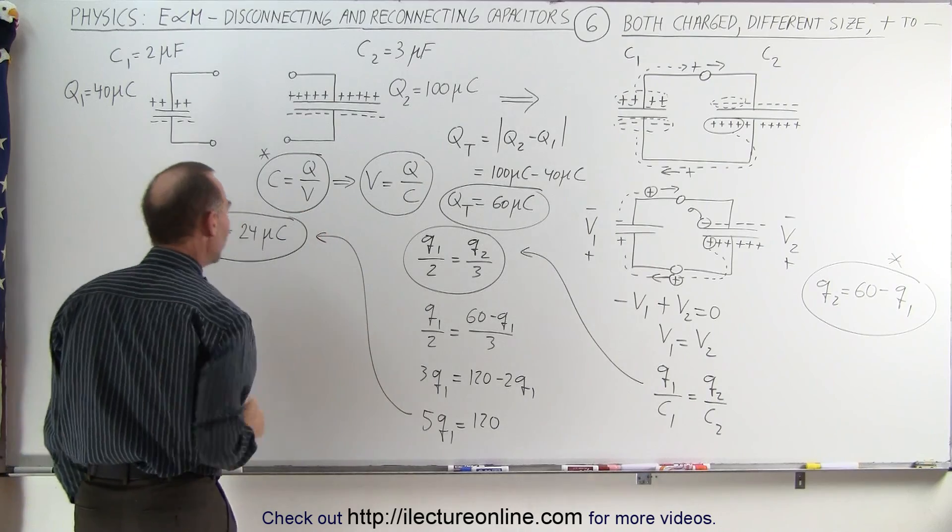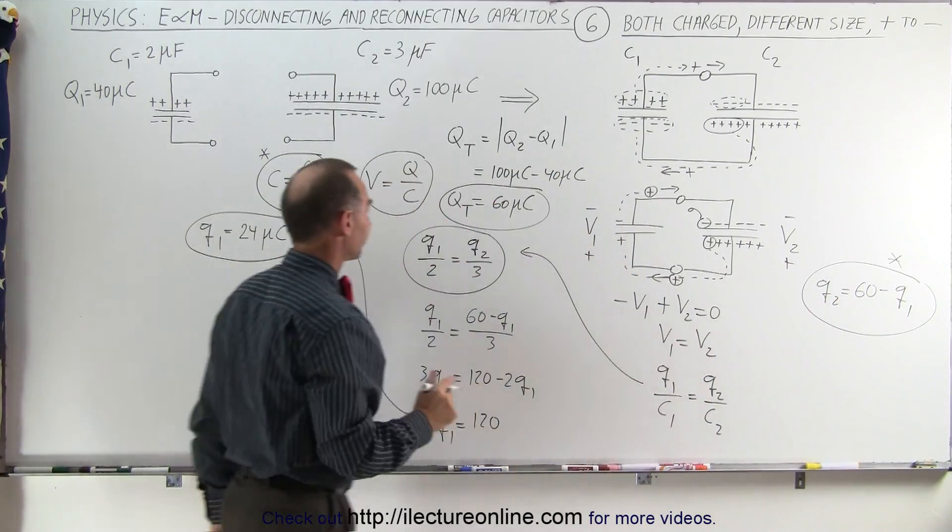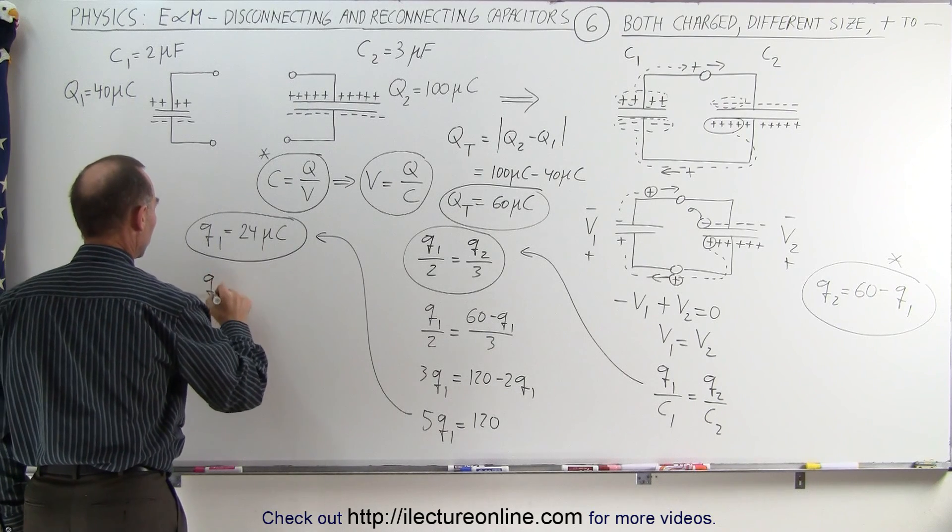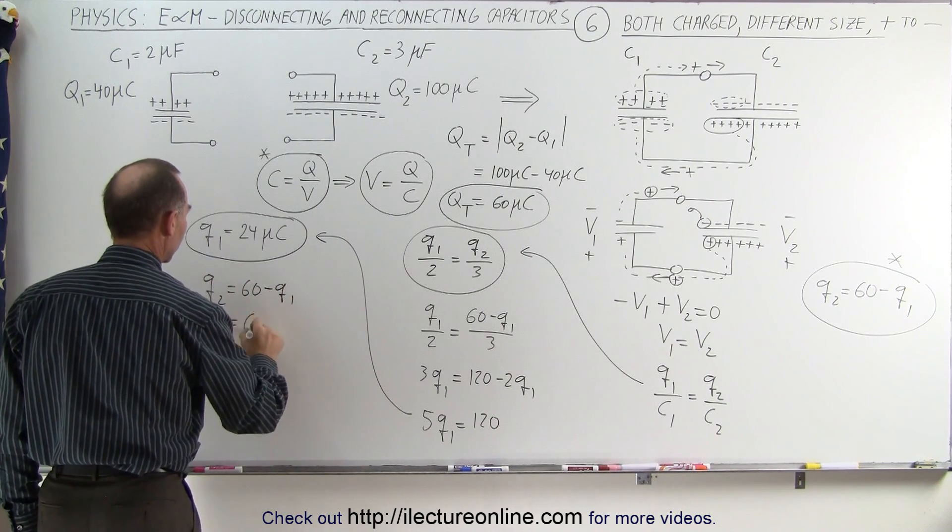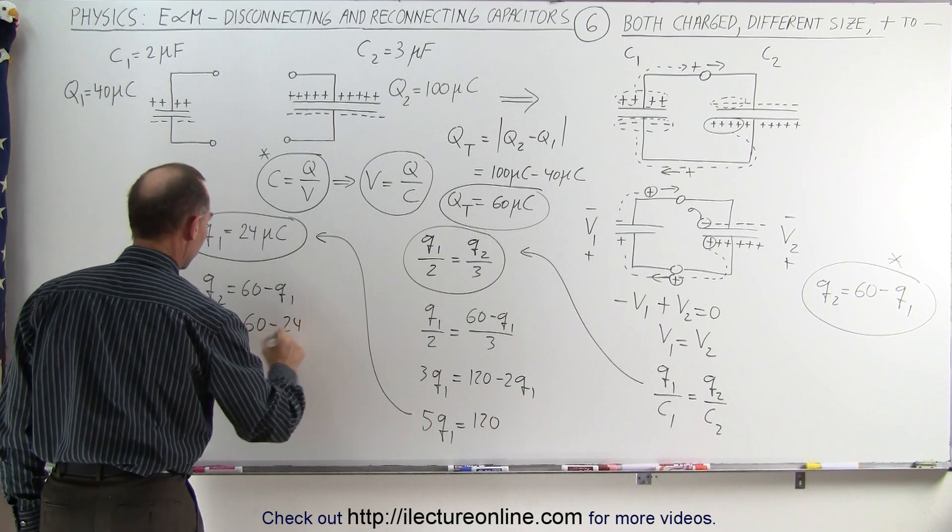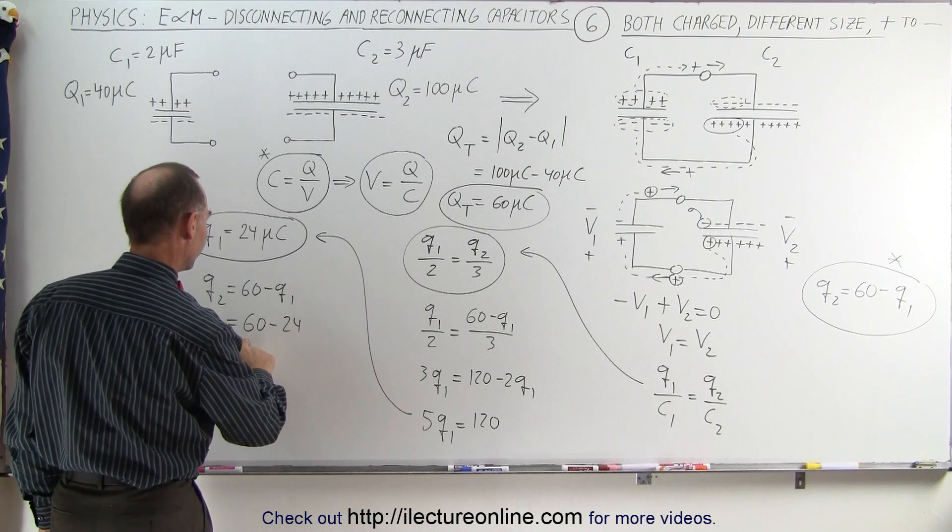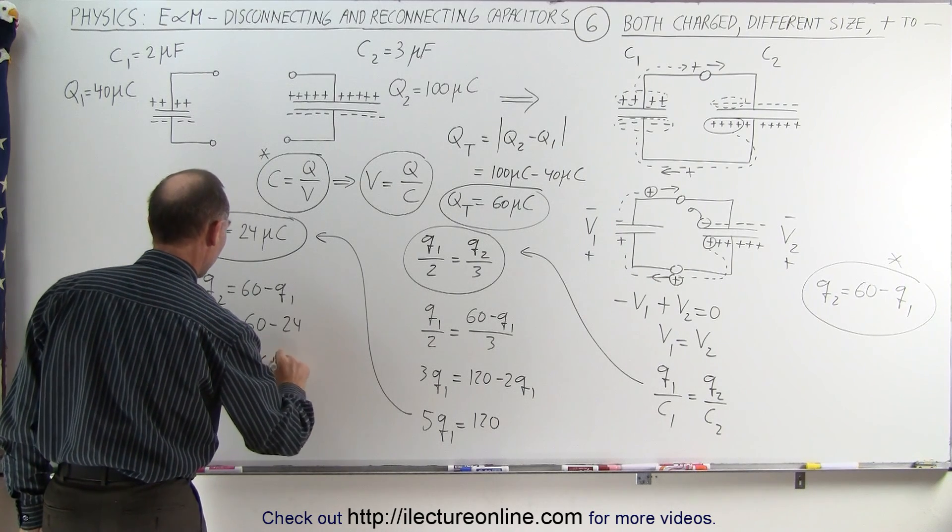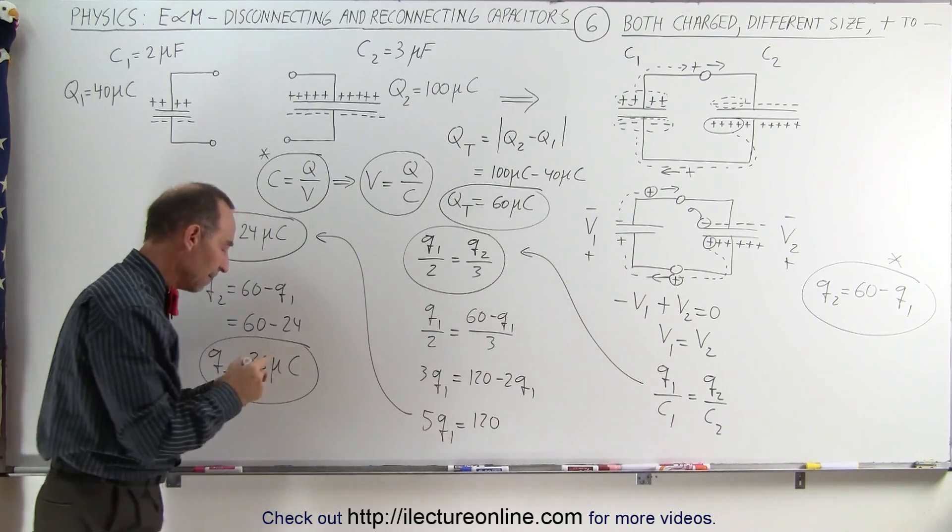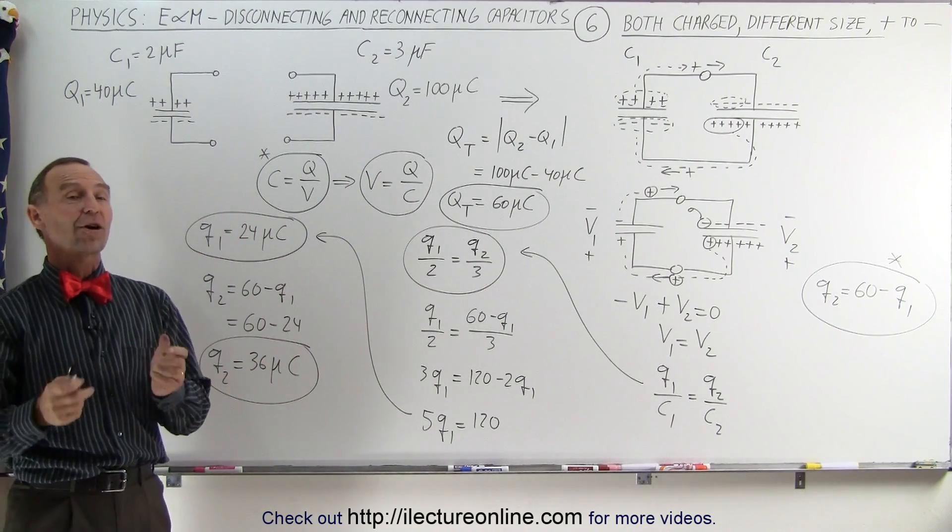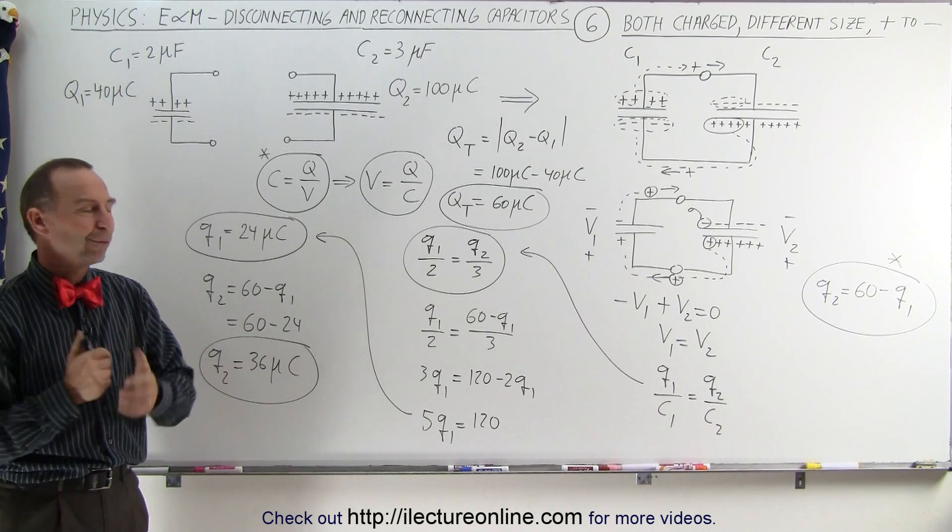So now we have Q1. To find Q2, we take this equation right here. Q2 is equal to 60 minus Q1, which is 60 minus 24. Therefore, Q2 is equal to 36 microcoulombs, and both of them added together add up to the 60. And that's how we find the charge on each when we connect the positive to the negative end of those two capacitors.